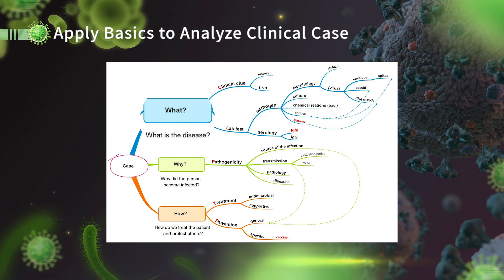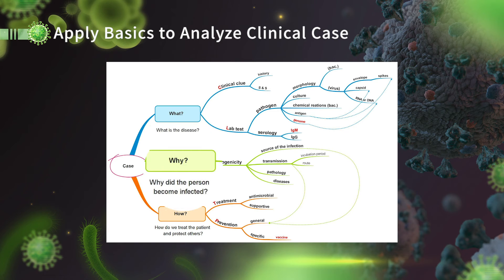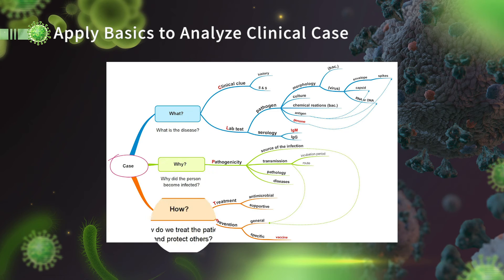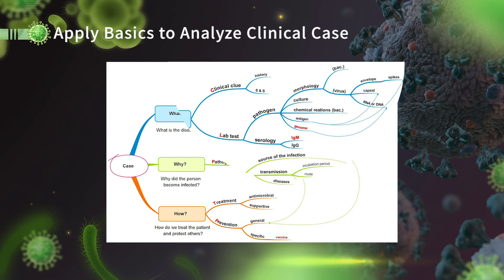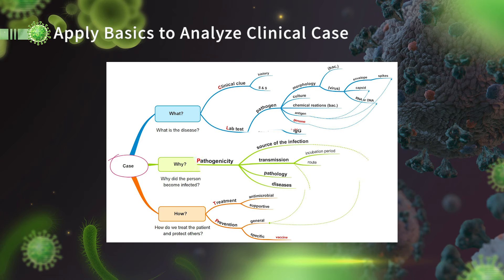Please answer: what is the disease? Why did the person get infected? And how do we treat patients and protect others? To answer the first question, we need to know the clinical clues — the history, the symptoms, and the signs — then make a preliminary diagnosis, and then use a lab test to confirm. To answer the second question, you need to know the source of infection, transmission route, and pathogenicity.